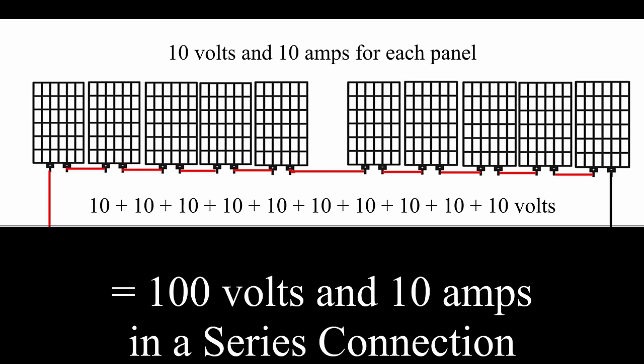In a series connection, the voltage will rise but the amps stay the same. Those same 10 solar panels in series will still produce only 10 amps, but if each panel produces 10 volts, together they will produce 100 volts. So you can change the voltage and amp rating by series or parallel connecting different components.